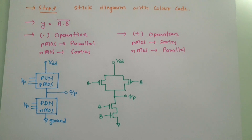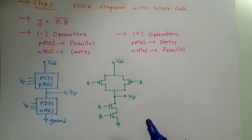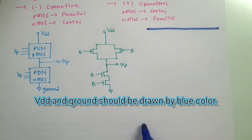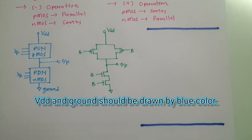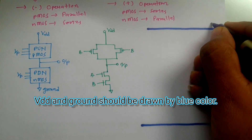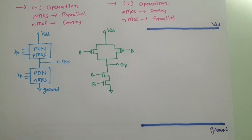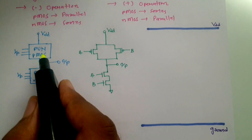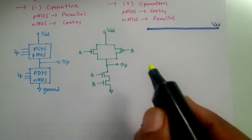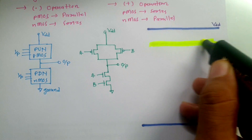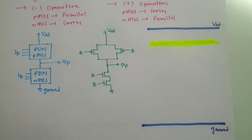Now I'll explain how we form the stick diagram. First we should have VDD and ground connections — on the top layer we'll have VDD and at the bottom we'll have ground. For PMOS connection we need P-type material along with VDD, and P-type material is represented by yellow color. You can see the yellow color indicating my P-type material here.